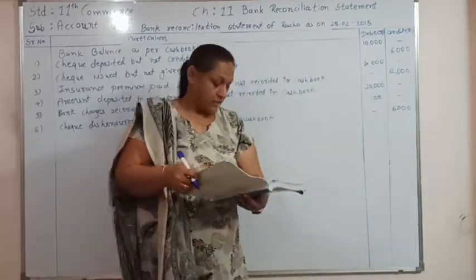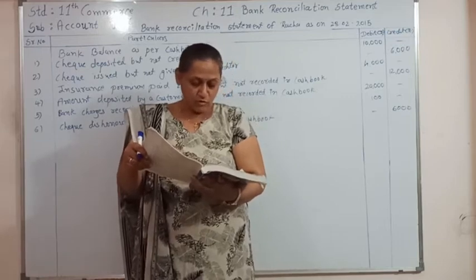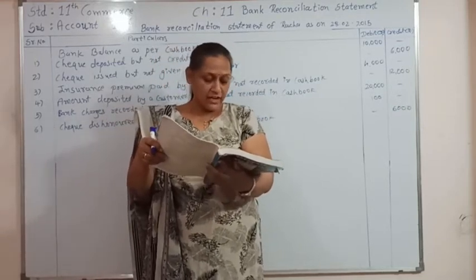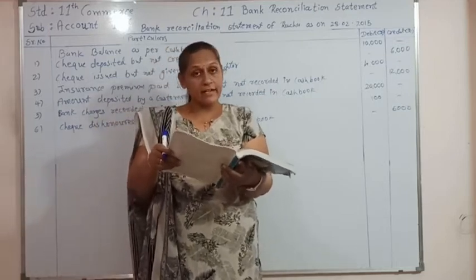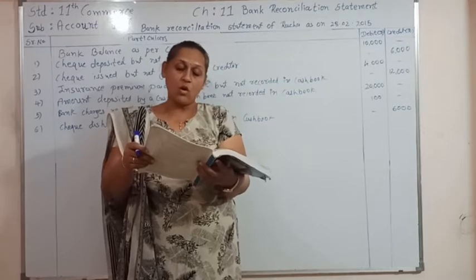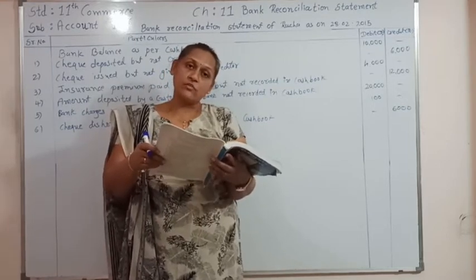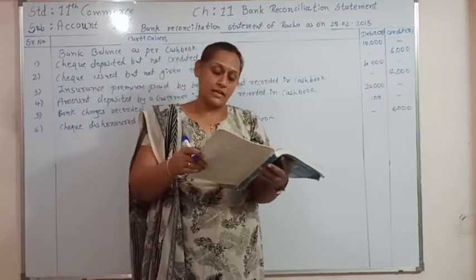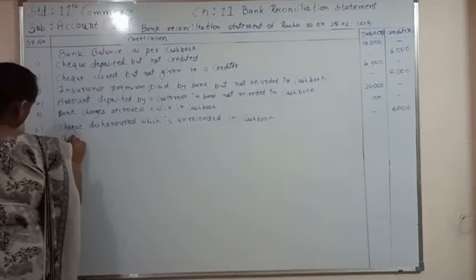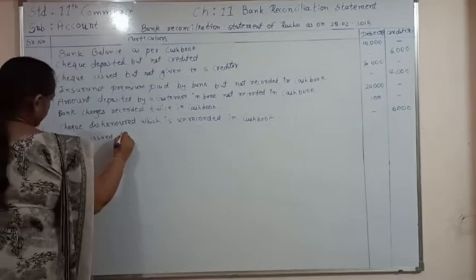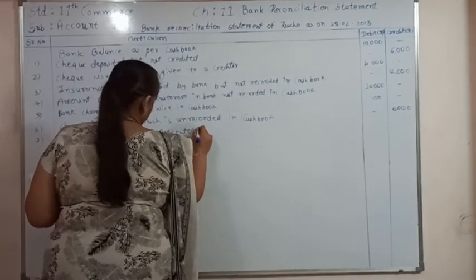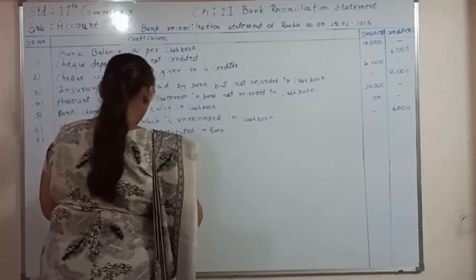Transaction number 7: cheques of ₹8,000 were issued, out of which a cheque of ₹2,000 was presented in bank on 1/3/15, which is after 28/2/15. These cheques of ₹8,000 have already been credited in the cash book. The cheque of ₹2,000 presented after the date should be debited in the BRS. Entry 7: cheque issued but not presented in bank — ₹2,000, debited in BRS.